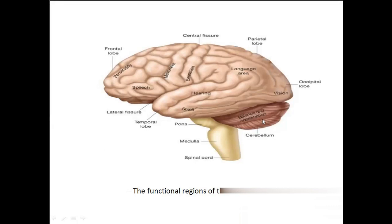The cerebellum is for balance and coordination. The brainstem consists of the midbrain (which is inside the brain), pons, and medulla oblongata. The medulla oblongata continues as the spinal cord.